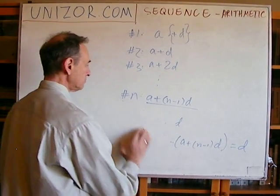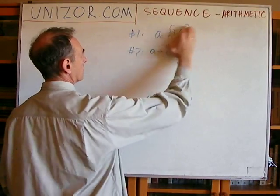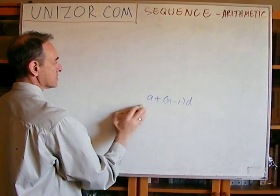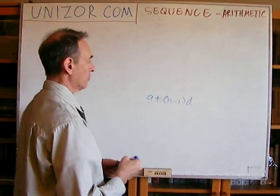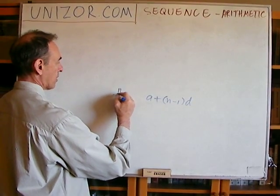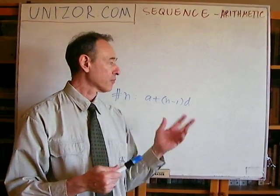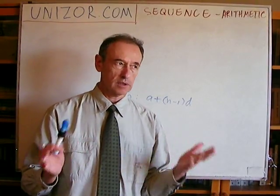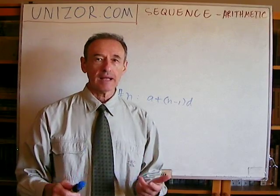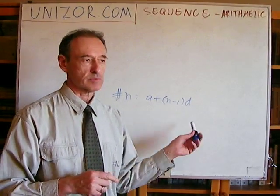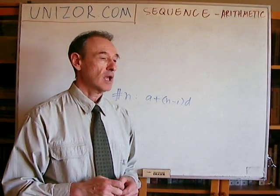So we have derived the formula for arithmetic progression, which starts with number A and adds D to every consecutive member. This is the formula for element number N. Now, what kind of numbers can A and D be? They can be any number — including complex — but in reality, people usually talk about real numbers, sometimes even integers, positive and negative.